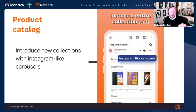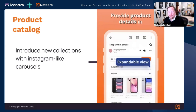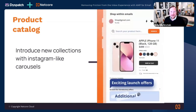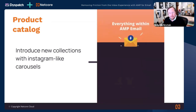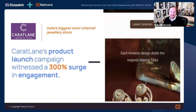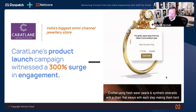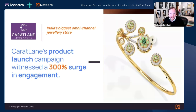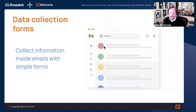With product carousels you can get much more interactive and feature much more product in a more engaging way with AMP for email. This is probably where a lot of people have started — it's a very cool, flashy use case. You can see big impacts: one of our customers in India, CaratLane, saw a 300% surge in engagement just from featuring detailed product information in the message itself, without needing to click through further.